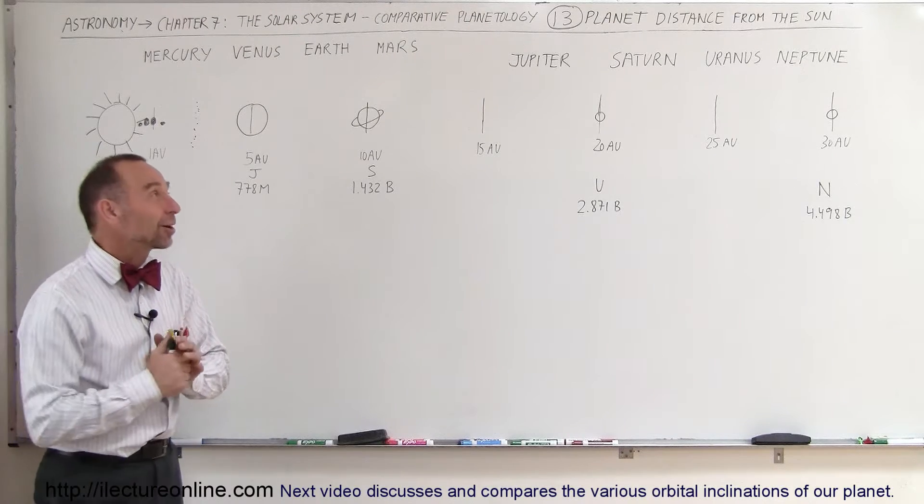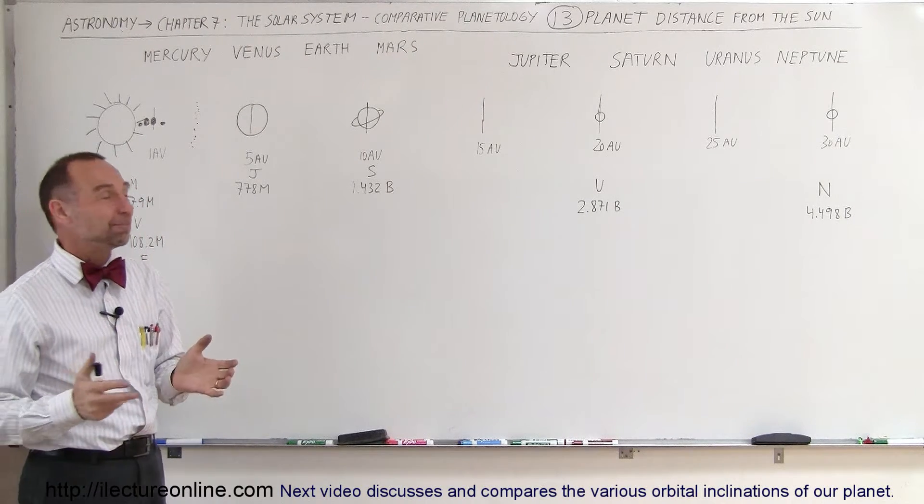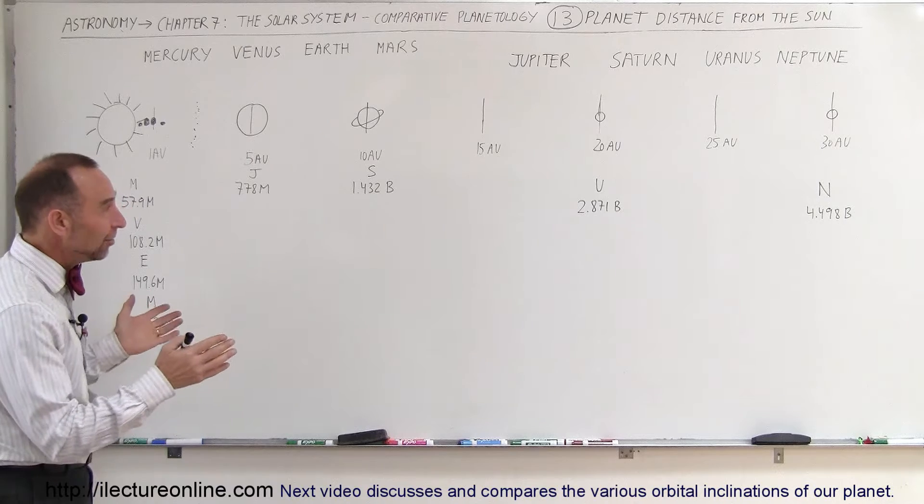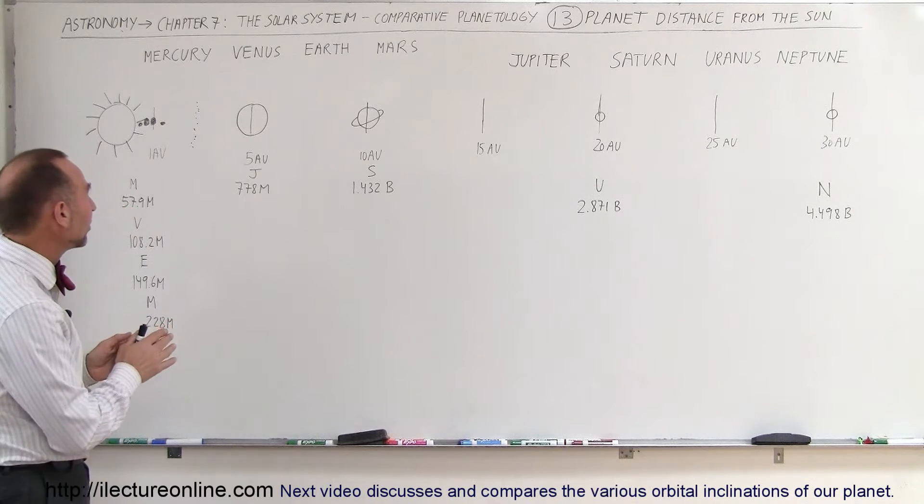Welcome to ElectroOnline, and now let's talk about the planet distances from the Sun. We have eight planets: the four gas planets and the four terrestrial planets.